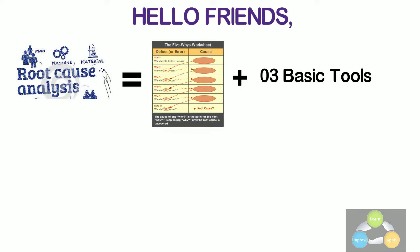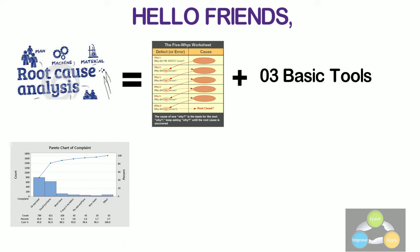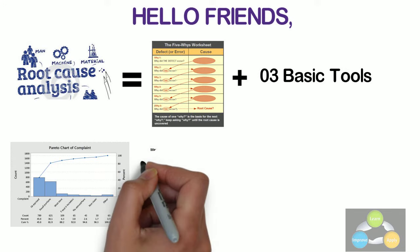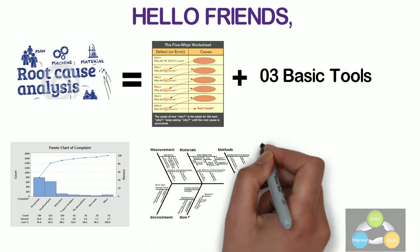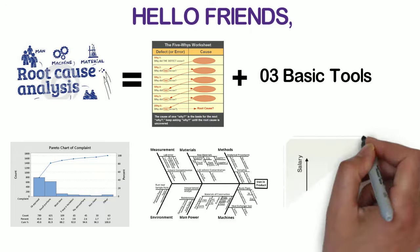These are Pareto chart shows on a bar graph which factors are more significant. Second, Fishbone or Ishikawa diagram. It identifies many possible causes for an effect or problem and sorts ideas into useful categories. And the third one is scatter diagram.